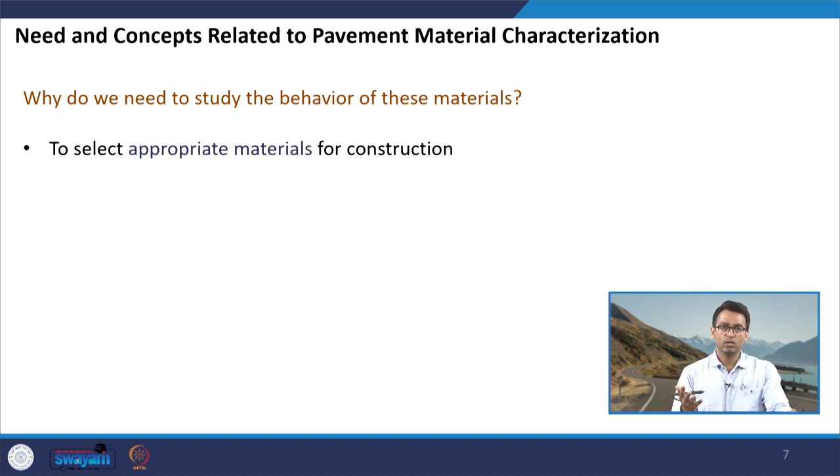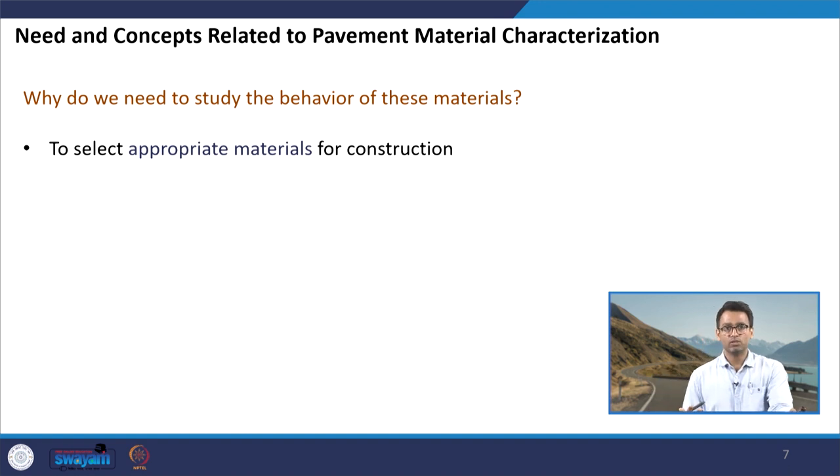We can have aggregates from different sources, and aggregates from different sources can have various mechanical strengths and different properties. For a specific construction, I want my pavement to be able to resist the load that will come. But if the strength of the material is very low such that it cannot take up the desired load, my purpose of constructing the pavement fails. Therefore, it is important that before going for construction, I have to test the appropriateness of these materials for the desired purpose.